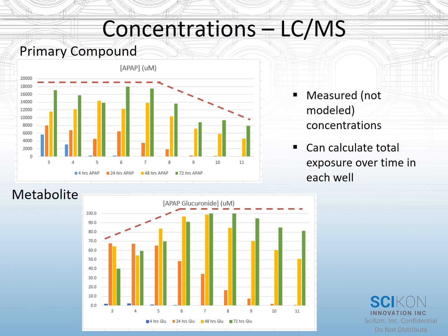We also did some LC-MS work, quantifying both parent compound and the primary metabolites associated with acetaminophen metabolism in the liver cells. It validates the story: we see the highest concentration of acetaminophen in the upstream wells, and that concentration decreases based on dilution and flow across the plate. We see an opposite effect with the metabolites — lower concentrations upstream, with metabolite concentrations accumulating and getting higher at the downstream end of the plate, at their highest concentrations in the wells where we're seeing the lowest percentage of cell viability and highest percentages of cell death.